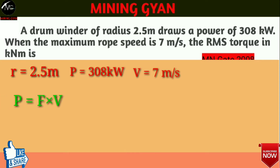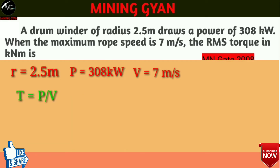अपने को पता है power is equal to force multiplied by velocity. But winding rope के case में force, winding rope पे लगने वाले tension के equal होगा। यानि power of winder is equal to tension in rope multiplied by rope speed। यहां से tension is equal to power divided by rope speed।